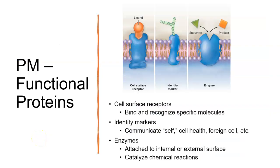Cell surface receptors bind to specific molecules called ligands. Ligands bind to macromolecules like a big receptor protein. An example of a ligand is the neurotransmitter acetylcholine: nerve cells release acetylcholine, it binds to the protein receptor on a muscle cell, and that's what triggers the muscle cell to contract. So it is a cell surface receptor protein.